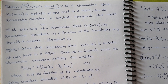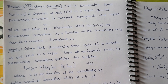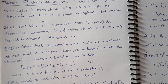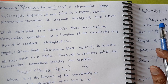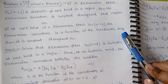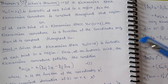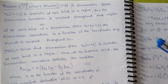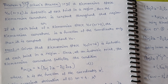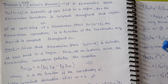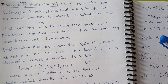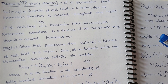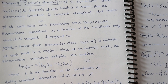Hello students. In the next tensor analysis video, this is unit 4, theorem 7, and its name is Schur's theorem. This statement is important for you to remember. If a Riemannian space Vn with n greater than 2 is isotropic at each point in the region, then the Riemannian curvature is constant throughout that region. You have read the isotropic definition in the last video.